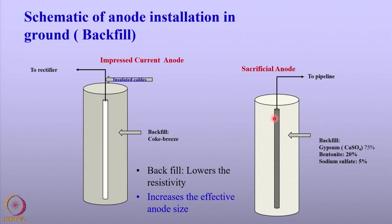One difference between sacrificial anode and impressed current anode systems is that in the case of impressed current anode systems, the cables are required to be insulated. Whereas in the case of sacrificial anodes, it does not matter much, because these electrical cables are also cathodically protected by the sacrificial anodes.